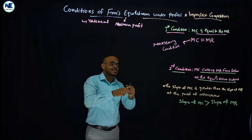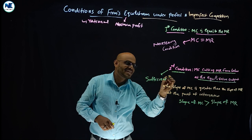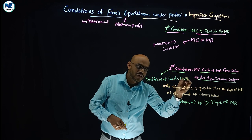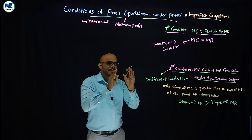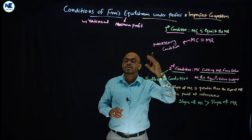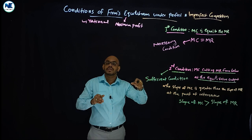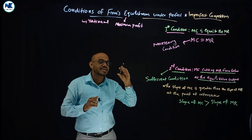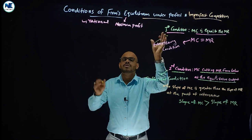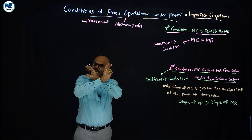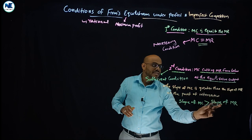This second condition is known as the sufficient condition. Both conditions apply the same way under perfect competition and imperfect competition. The difference is only in the shape of the curves. Under perfect competition, the MR curve is a horizontal straight line coinciding with the AR curve. Under monopoly and monopolistic competition, the MR curve is downward sloping. The two conditions remain: MC = MR, and the slope of MC is greater than the slope of MR.